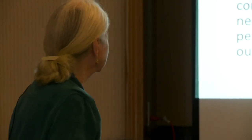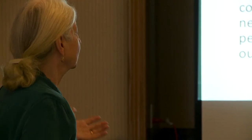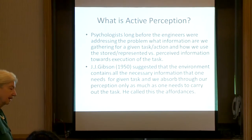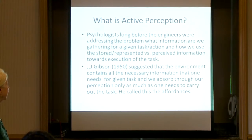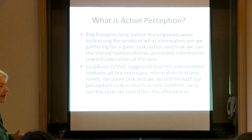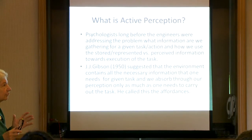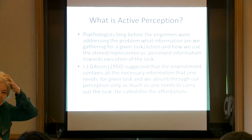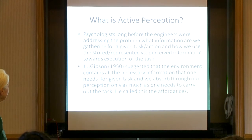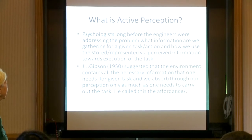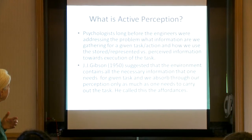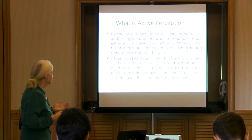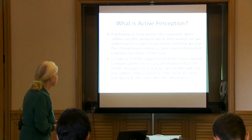What is active perception? As you can see, the psychologists, long before the engineers, were addressing the problem: what information are we gathering for a given task? It was always recognized that you are perceiving and processing data based on task, and how we use stored and represented information. Those of us who work in perception are constantly struggling with how much information is outside, how much do we store internally, and how these two interplay. J.J. Gibson, who has been my inspiration and was a psychologist at Harvard University, suggested that the environment contains all the necessary information one needs for a given task, and we absorb through our perception only as much as one needs to carry out — and he called them affordances.